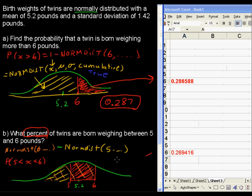That's not that difficult to do, we'll say that is approximately equal to 26.9%, so 26.9%, almost 27% of twins are born between the weights of 5 and 6 pounds.